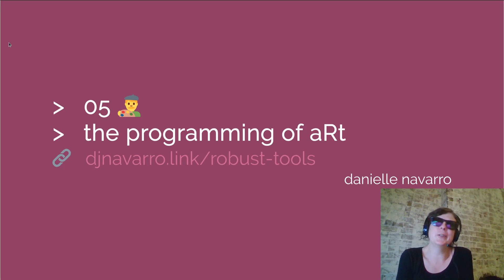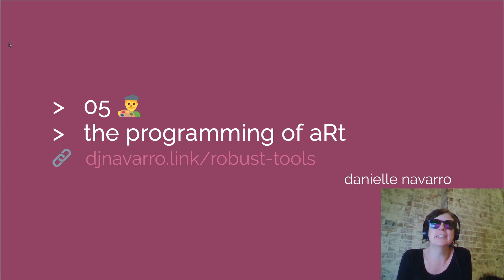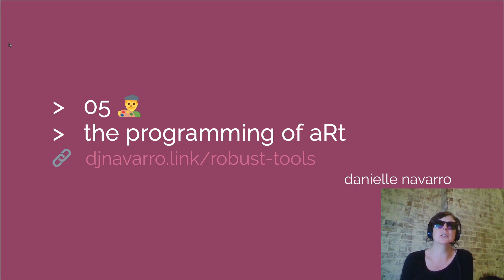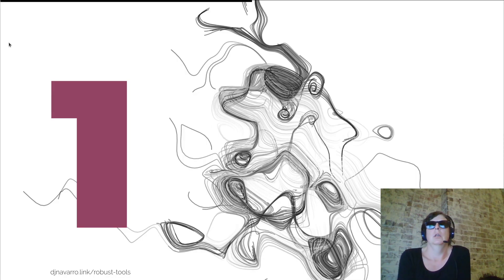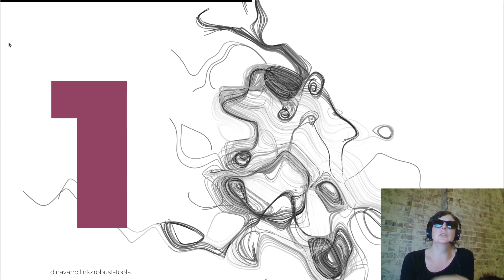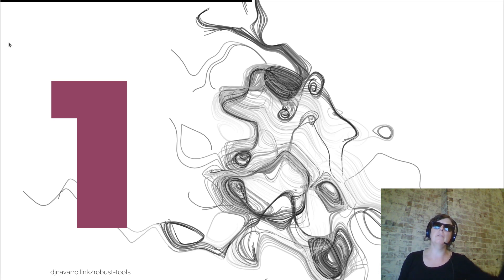Hi! Welcome to the third of my videos on the programming of art, in which we're going to create a generative art system and accidentally learn some programming concepts as we go. This is part of the Robust Tools class that I'm currently teaching. As a reminder, this is where we're up to — we're trying to create these sorts of pictures that are drawn as a collection of paths that unfold over time.